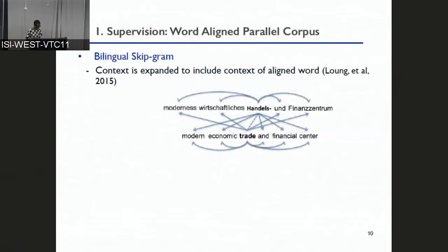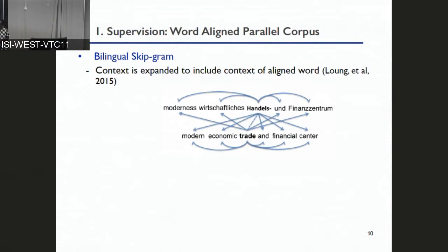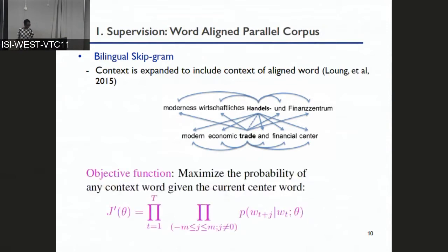Here is an example of a method requiring a word-aligned parallel corpus: bilingual skip-gram, a straightforward extension of skip-gram. The idea is that we expand the context to also include the context of the word that a particular word is aligned to. So for the word 'straight,' for example, we expand the context to also include the context of its translation. In the skip-gram objective, what changes is simply that the context becomes larger.